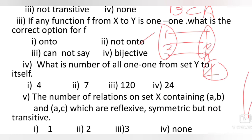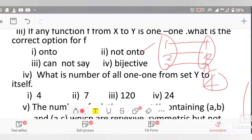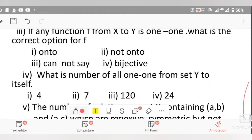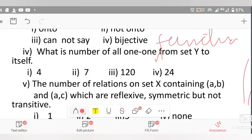For the fourth part: what is the total number of one-one functions from set Y to itself? The number of one-one functions from a set to itself equals n factorial, where n is the number of elements. Set Y has 4 elements, so the number of one-one functions is 4 factorial = 24. The answer is 24.